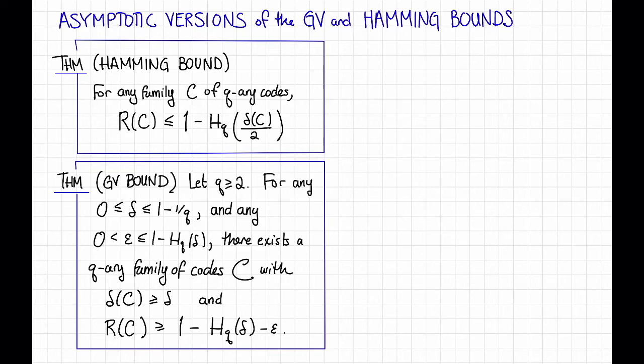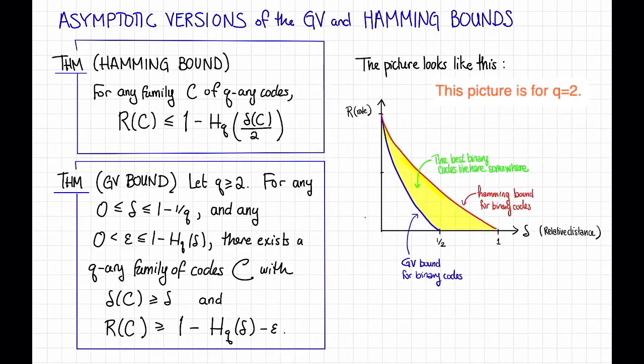Now we have somewhat simpler expressions for the tradeoff between rate and distance. What do these look like? The great thing about looking at these asymptotics is that now we only have two parameters to look at, the rate and the relative distance. We don't care about n or k or d or any of those things. Since we only have two parameters, we can plot them.